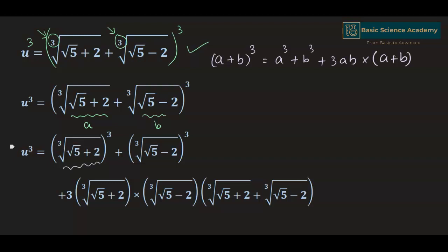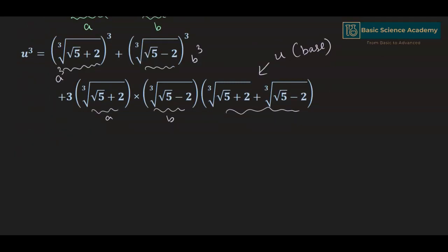So this gives us u³ = a³ + b³ + 3ab multiplied by (a + b), and (a + b) is also equal to u, which is the base. We can write: a³ = (√5 + 2)^(1/3) raised to the power 3, which gives (√5 + 2); and b³ = (√5 − 2)^(1/3) raised to the power 3, which gives (√5 − 2).